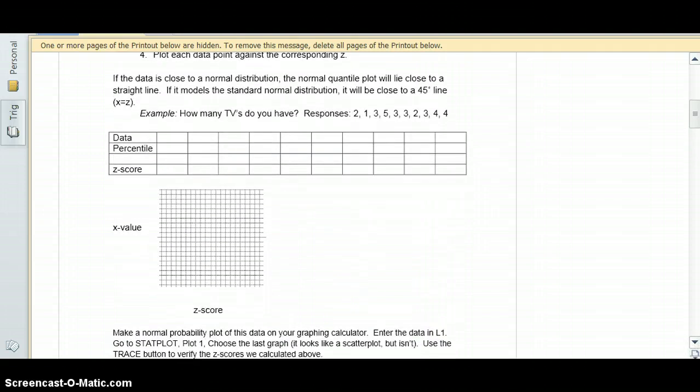For example, how many TVs do you have? The responses given were 2, 1, 3, 5, 3, 3, 2, 3, 4, 4. If we go ahead and put the data in order: there's one 1, two 2s, four 3s, two 4s, and one 5.